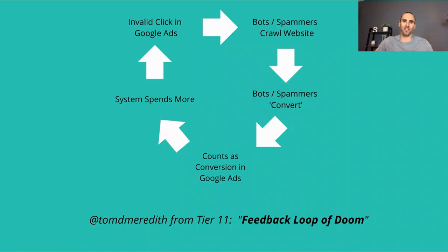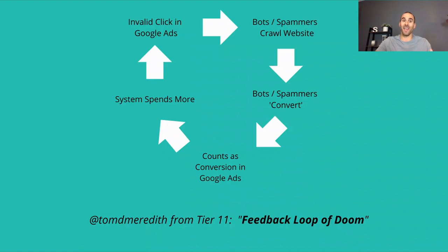The feedback loop looks something like this: you receive invalid clicks in Google Ads, bots or spammers crawl your website, bots or spammers convert by filling out your lead form or contact us form, and then it counts as a conversion inside of Google Ads. Now, if you have automated bidding set up, the Google Ads system — especially in Performance Max — may actually spend more because it's registering as a conversion, which would lead to more invalid clicks.